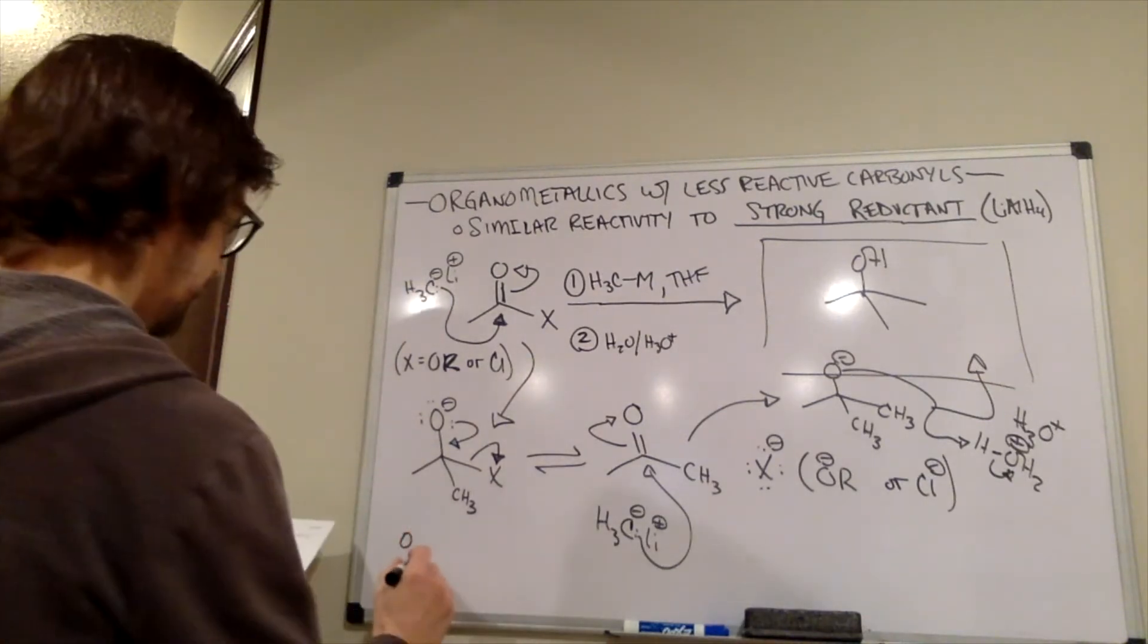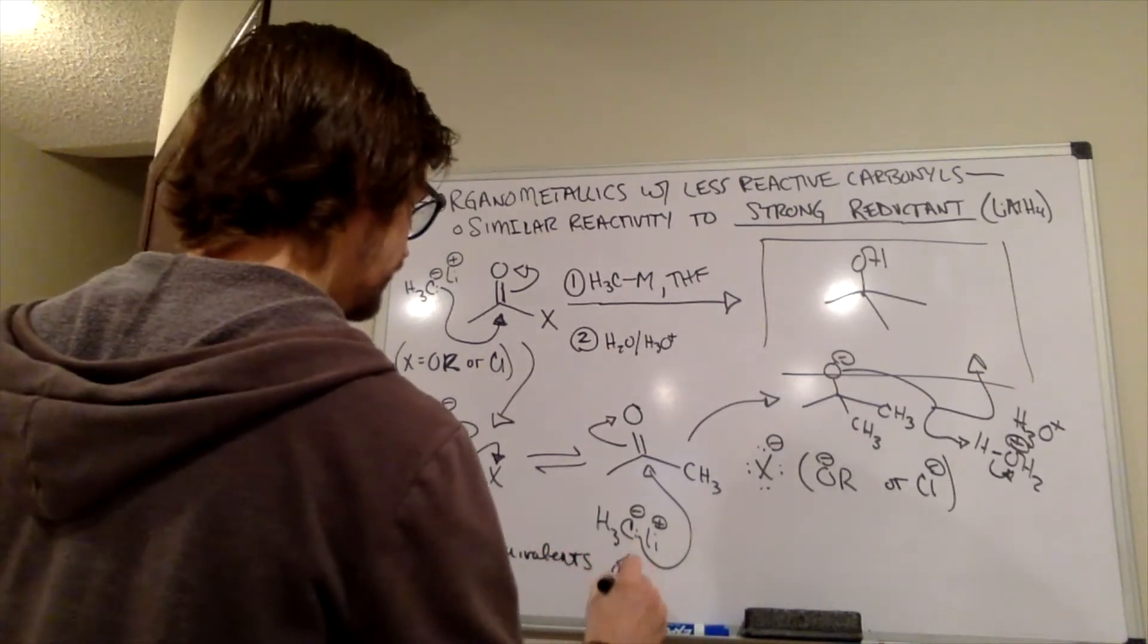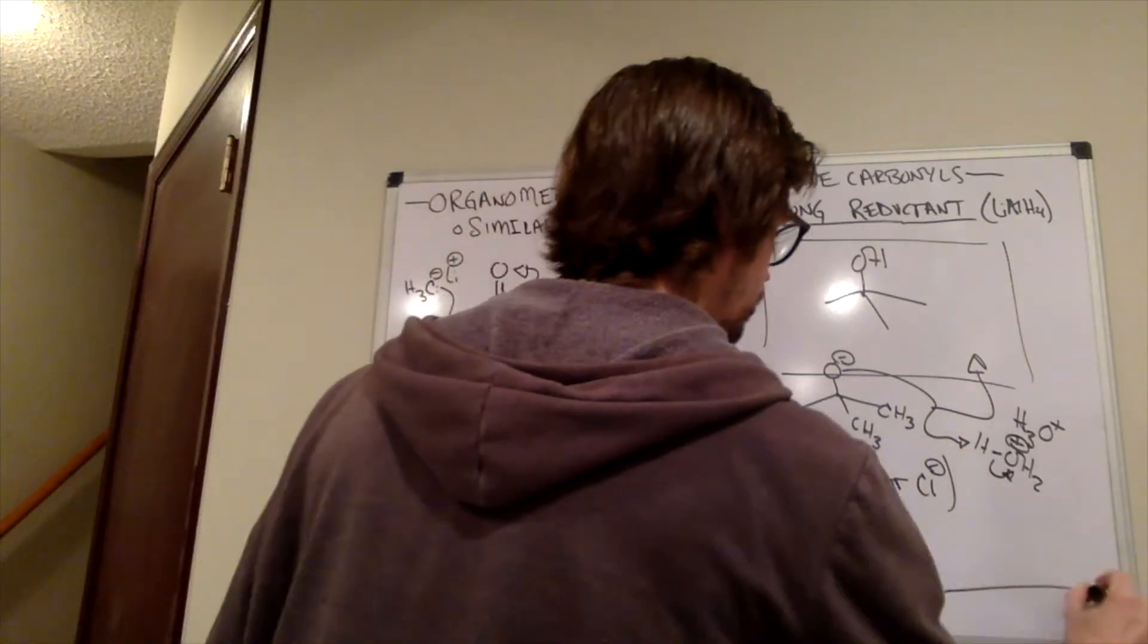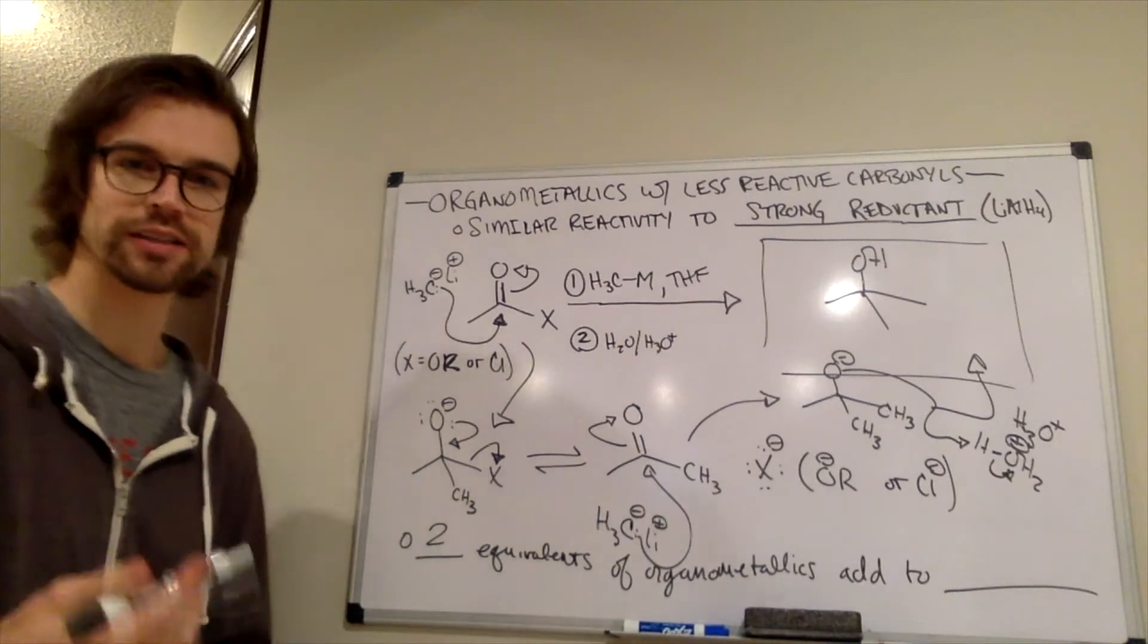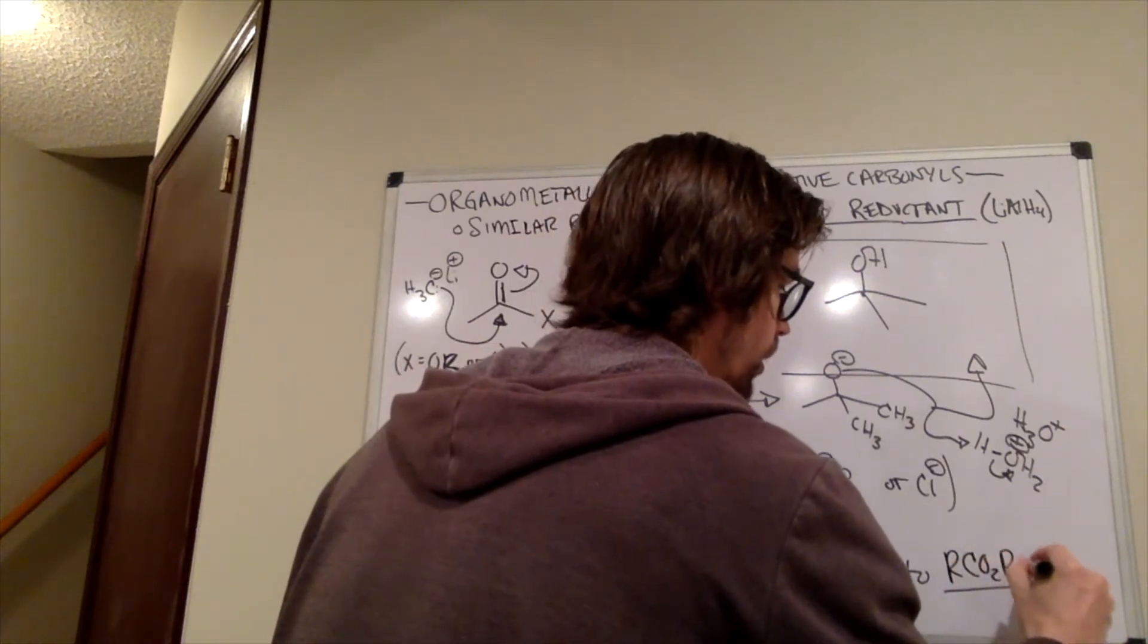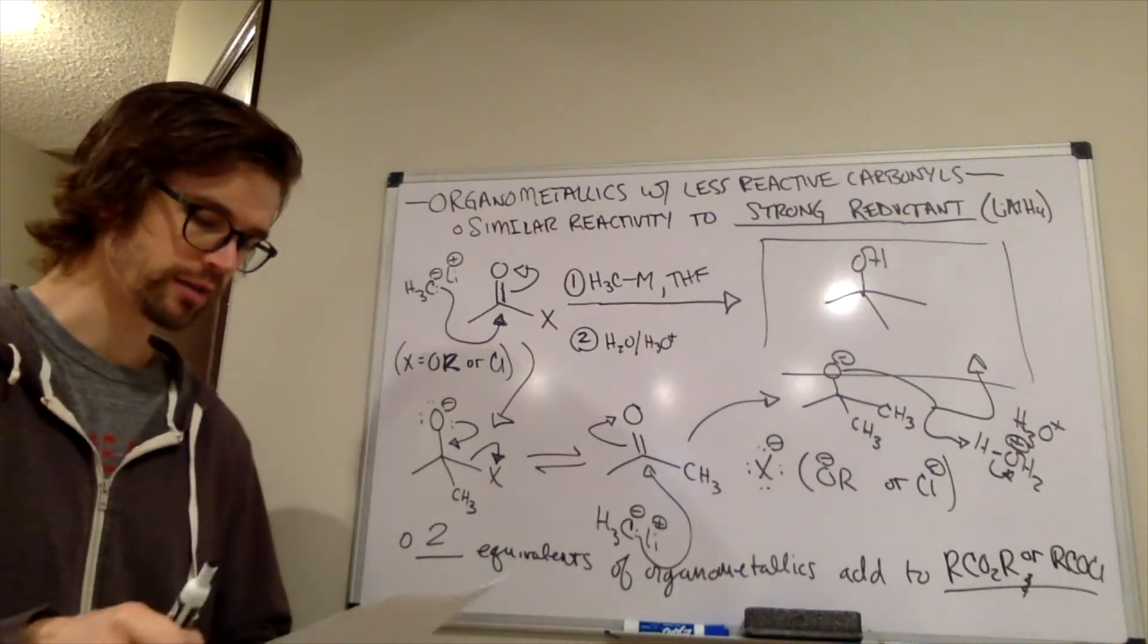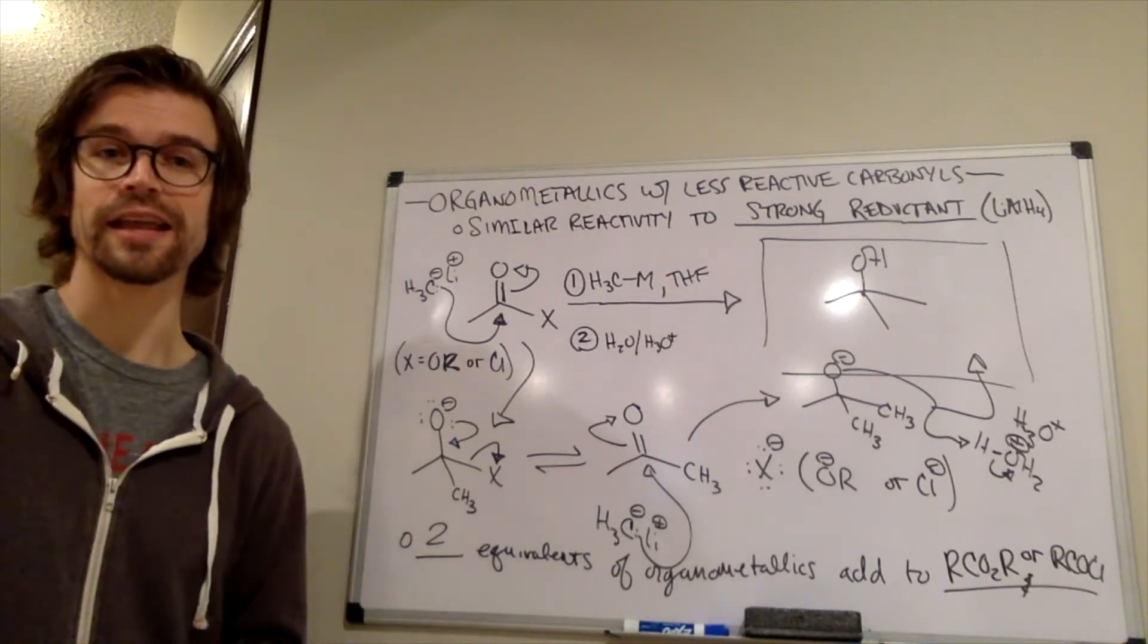Last blank, said blank equivalence. Blank equivalence of organometallics. Add to blank. And what do we see? We saw one equivalent, two equivalents. Two of them were used. So two equivalents of organometallics add to esters or acid chlorides. So we'll just draw RCO2R. And then I'll put in for RCOCl. That's the condensed formula of an acid chloride.